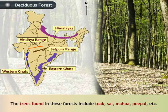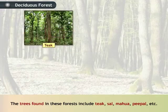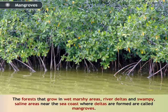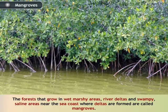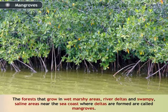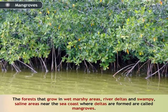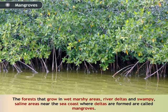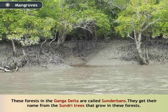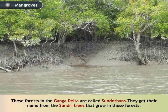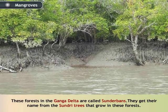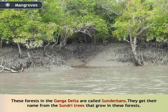The trees found in deciduous forests include Teak, Sal, Mahua and Peepal. The forests that grow in wet marshy areas, river deltas and swampy saline areas near the seacoast where deltas are formed are called mangroves. These forests in the Ganga delta are called Sundarbans. They get their name from the Sundari trees that grow in these forests.